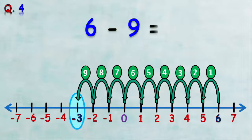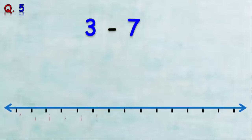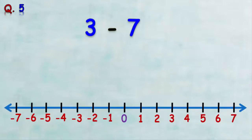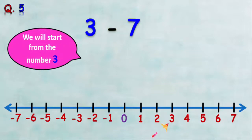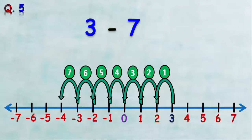Fifth example: find three minus seven. We want to subtract three and seven. As usual, we draw a number line, then we start at number three and make seven backward jumps: one, two, three, four, five, six, seven. We arrive at negative four, so three minus seven is negative four.